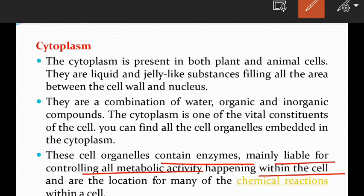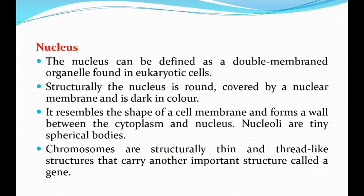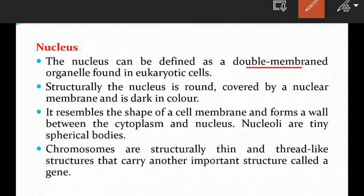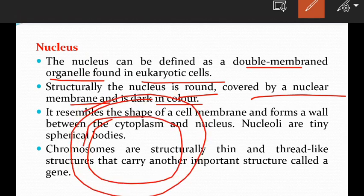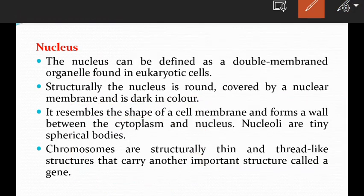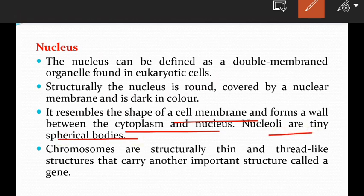The nucleus can be defined as a double membrane organelle found in eukaryotic cells. Structurally, the nucleus is round, covered by a nuclear membrane, and is dark in color. It resembles the shape of the cell membrane and forms a wall between the cytoplasm and nucleus. Nucleoli are tiny spherical bodies.